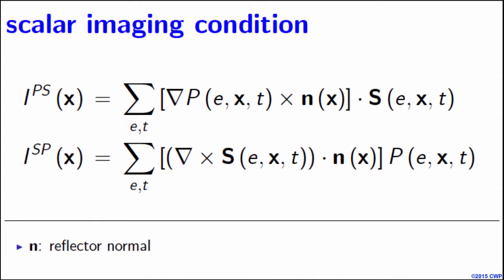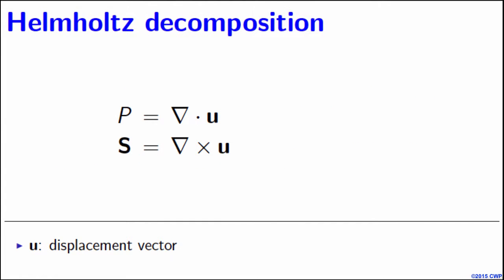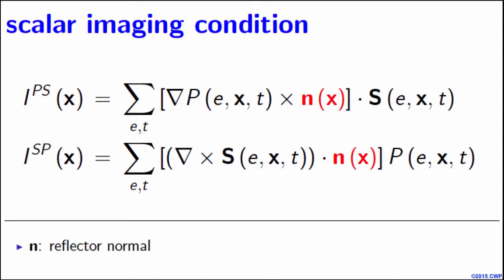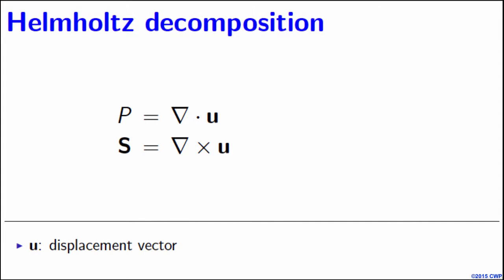Here are the equations for the PS and SP images that we derived. The top line is for the PS image and the bottom line is for the SP image. In the imaging condition, we rely on a variable which is the reflector normal — this is prior information we can obtain before doing migration. The imaging condition contains P and S waves decomposed from the displacement wave fields using Helmholtz decomposition, where P is computed through the divergence of the displacement wave field, while S is a curl.